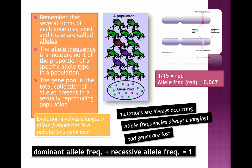The gene pool refers to all the alleles present in a particular population at any given time. So in humans, for example, we might ask what is the allele frequency for the cystic fibrosis gene — and you can actually calculate that. We're going to do some of those calculations later in this evolution unit. For example, if 1 out of 15 individuals is carrying a particular allele, then we can calculate a frequency. An important thing to remember is that the dominant allele frequency plus the recessive allele frequency equals one.